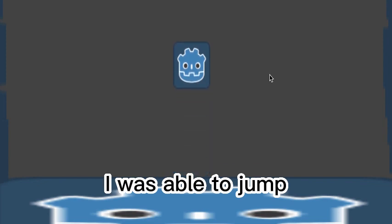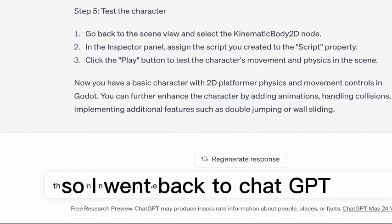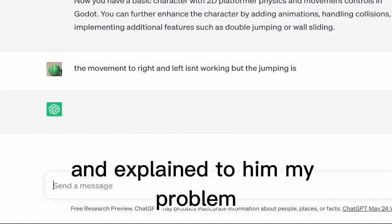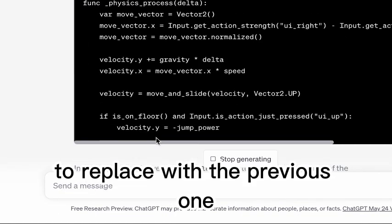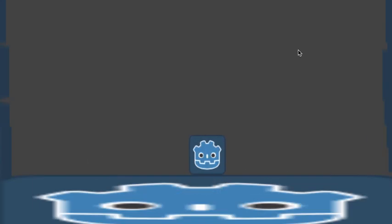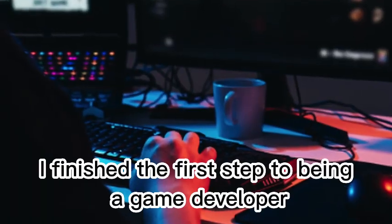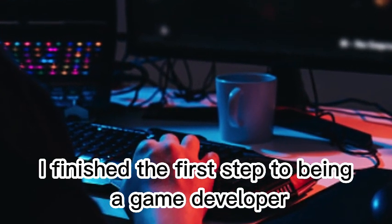I was able to jump but wasn't able to move left and right. So I went back to ChatGPT and explained to him my problem and he gave a correct code to replace with the previous one. So I did exactly that and I tested the game again. And it worked. Finally after all of this hard work, I finished the first step to being a game developer.